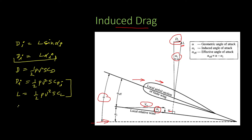So C_Di is equal to C_L times alpha_i. Now this induced angle of attack alpha_i depends on the downwash, and the downwash throughout the planform basically depends on the lift distribution throughout the planform.